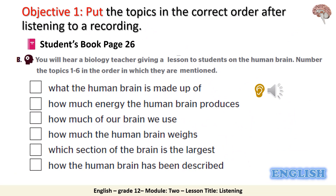Now we read the listening task. In this exercise, you will listen to a biology teacher talking to his students about the human brain. Your task is to order these topics from 1 to 6: what the human brain is made up of, how much energy the human brain produces, how much of our brain we use, how much the human brain weighs, which section of the brain is the largest, and how the human brain has been described. Listen and write the number next to the topic in the order it is mentioned.